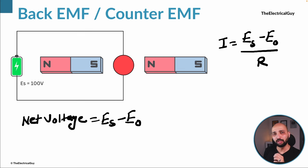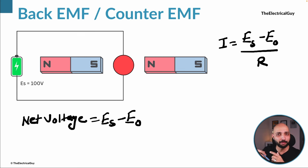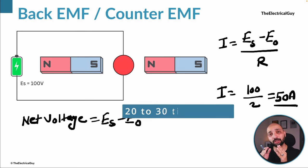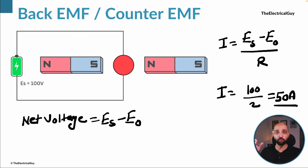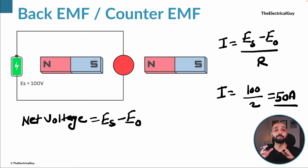Initially, when the supply is just connected and the motor is in a standstill condition, the back EMF E0 is zero because there is no rotation, no flux is being cut, and no EMF is induced. So the current is simply Es divided by the armature resistance. With 100V supply and 2 ohm armature resistance, the starting current would be 50 amperes — generally 20 to 30 times the full-load current. If back EMF never builds up, 50 amperes would flow continuously and completely damage the motor and the connected system.